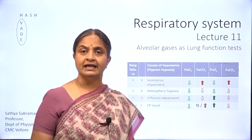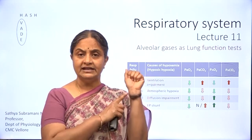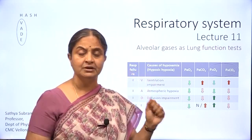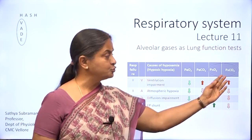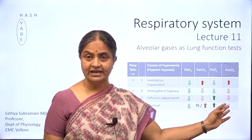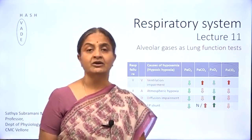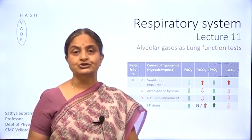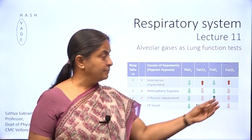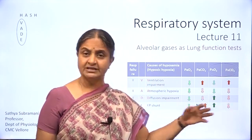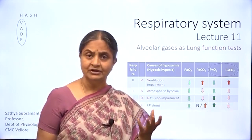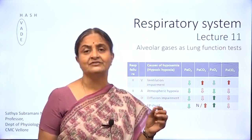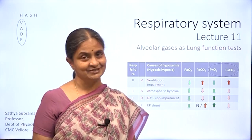Logically, one would think that arterial carbon dioxide estimation is an invasive procedure — you need an arterial blood gas sample — so why not estimate alveolar carbon dioxide and use it as a surrogate for arterial carbon dioxide? That would be the most logical thing to do. But estimation of alveolar carbon dioxide, though it is a non-invasive procedure, the equipment is expensive and the machine is available only in intensive care units.